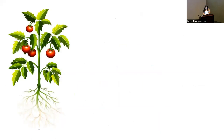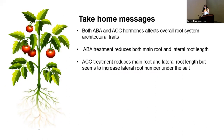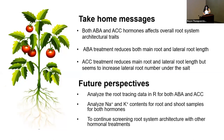This brings me to the end of my talk. Overall, both ABA and ACC hormones were shown to affect overall root system architectural traits. The ABA treatment showed to reduce both main and lateral root length. The ACC treatment showed to reduce main root and lateral root length, but seemed to increase lateral root number under salt stress. For the future, we expect to analyze root tracing data in R for both ABA and ACC, to analyze sodium content for root and shoot samples for both hormones, and to continue screening root system architecture with other hormonal treatments.